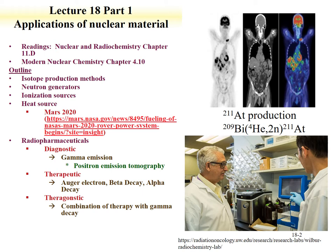Therapeutic radiopharmaceuticals rely upon a decay that is cytotoxic to a cell. The idea is to place the isotope on or inside a cancer cell. The decay by either alpha, beta, or Auger electrons produces a cytotoxic environment in which the cell is killed. An example of an alpha emitter used for alpha therapy is astatine-211. The reaction is shown here, where bismuth-209 is impinged upon with helium-4, two neutrons come out, and astatine-211 is produced.